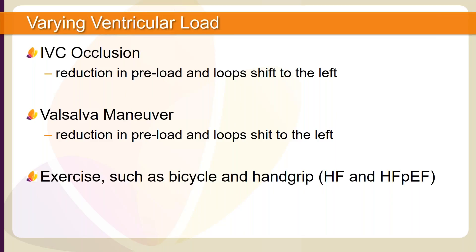There are several methods used to alter volume load in the ventricle. We will discuss several of these techniques and their load effect. Traditionally, literature cites the use of a balloon catheter to occlude the inferior vena cava. IVC occlusion will reduce the preload volume in the ventricle, and a PV loop shift to the left will be evident as well as volume and pressure decrease. Non-invasive methods of altering load include the Valsalva maneuver, bicycle, and hand grip exercise.